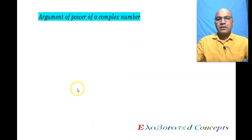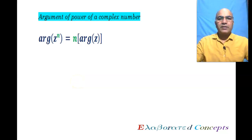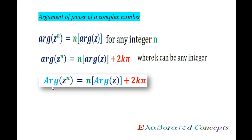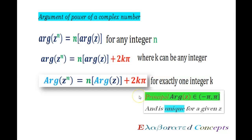Next is the argument of a power of complex numbers. Argument of z^n is equal to n times argument of z plus 2kπ, where k can be any integer. For the principal argument of z^n, it equals n times argument of z plus 2kπ, where k is exactly one of 0, 1, or minus 1.